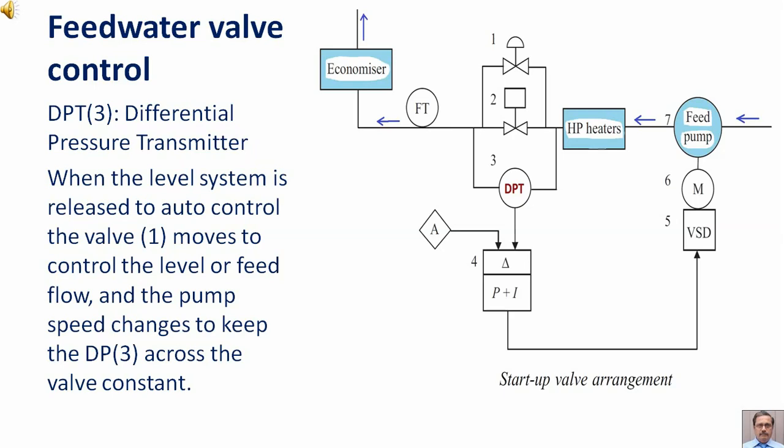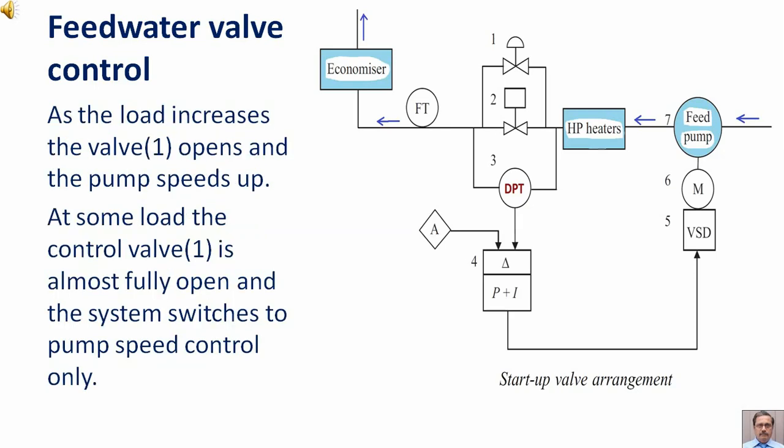When the level system is released to auto control, the valve first item moves to control level or feed flow, and the pump speed changes to keep the DP across the valve constant. As the load increases, the valve first item opens and the pump speeds up. At some load, the control valve one is almost fully open and the system switches to pump speed control only.